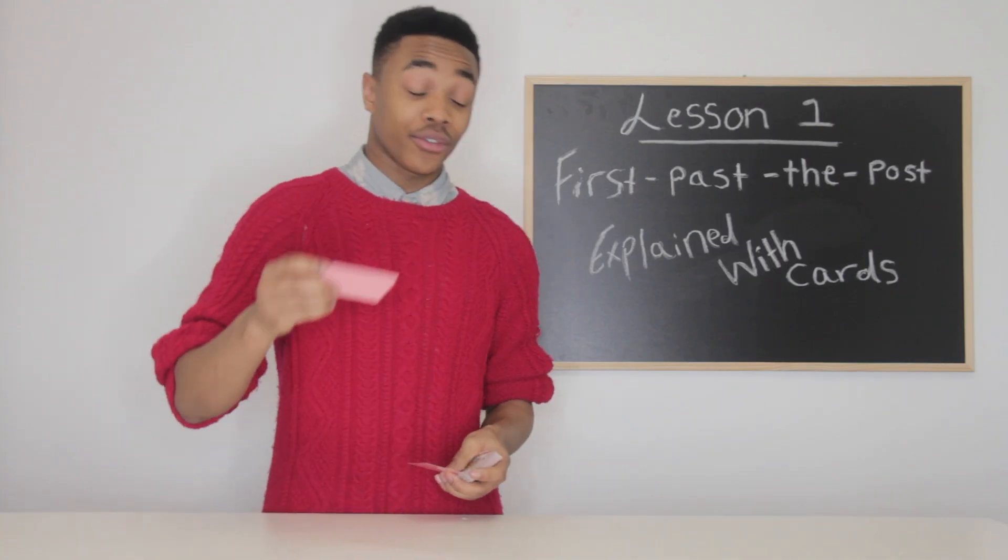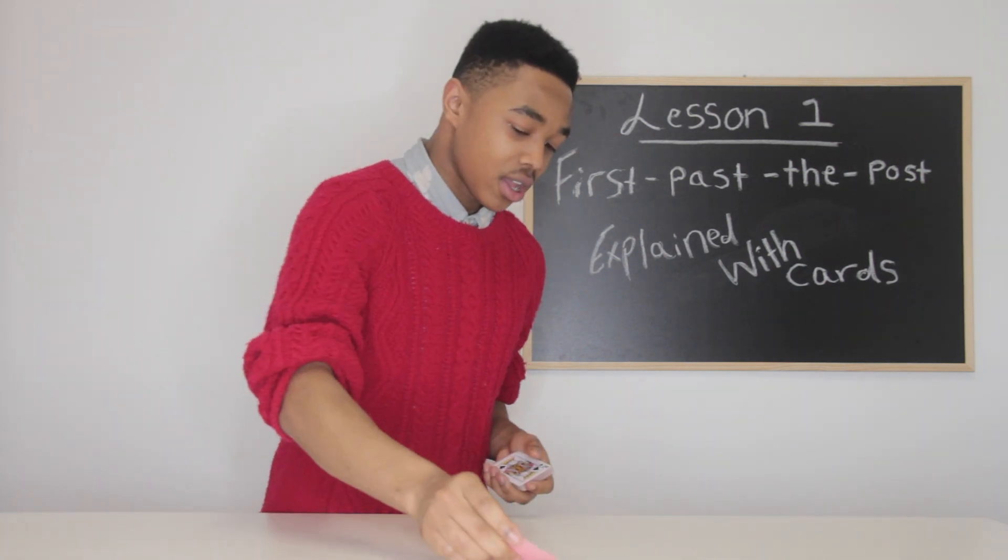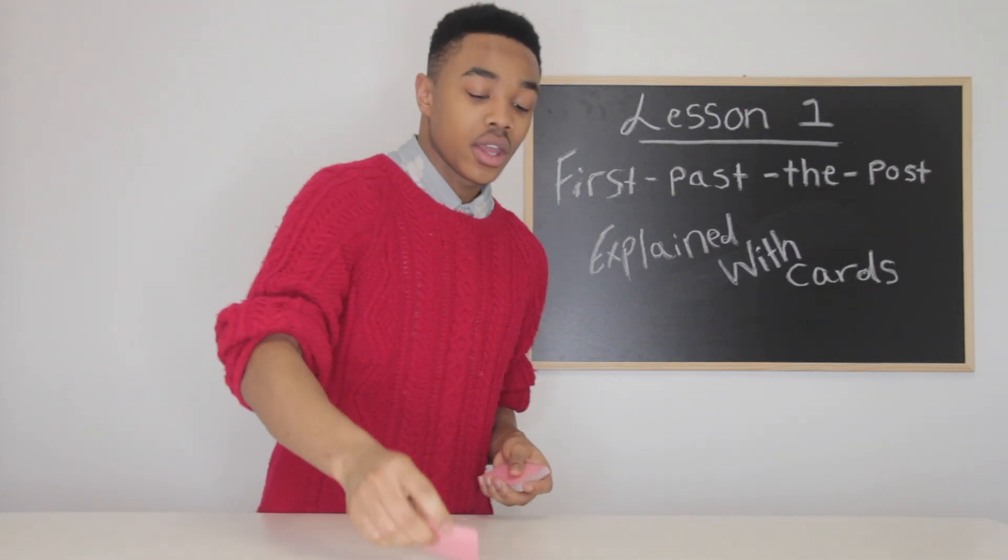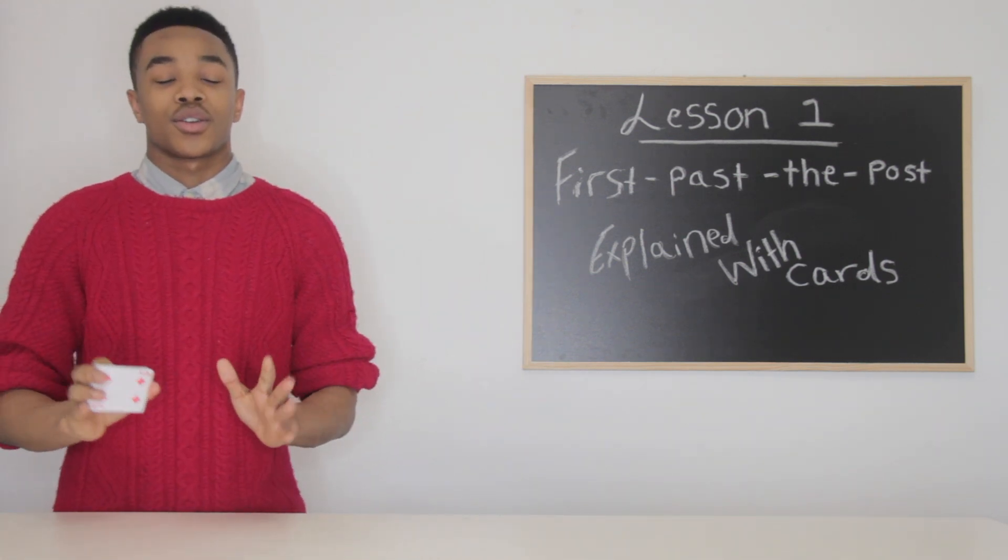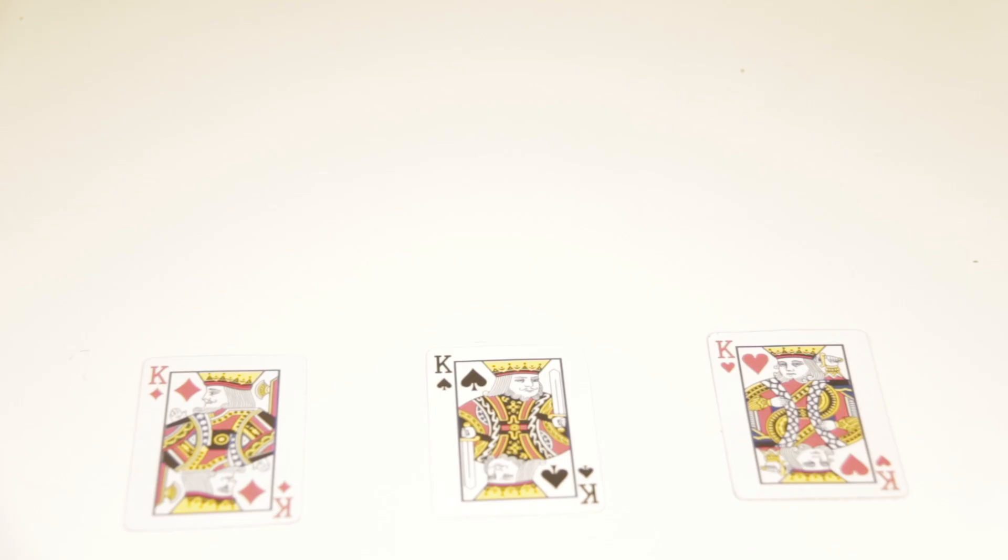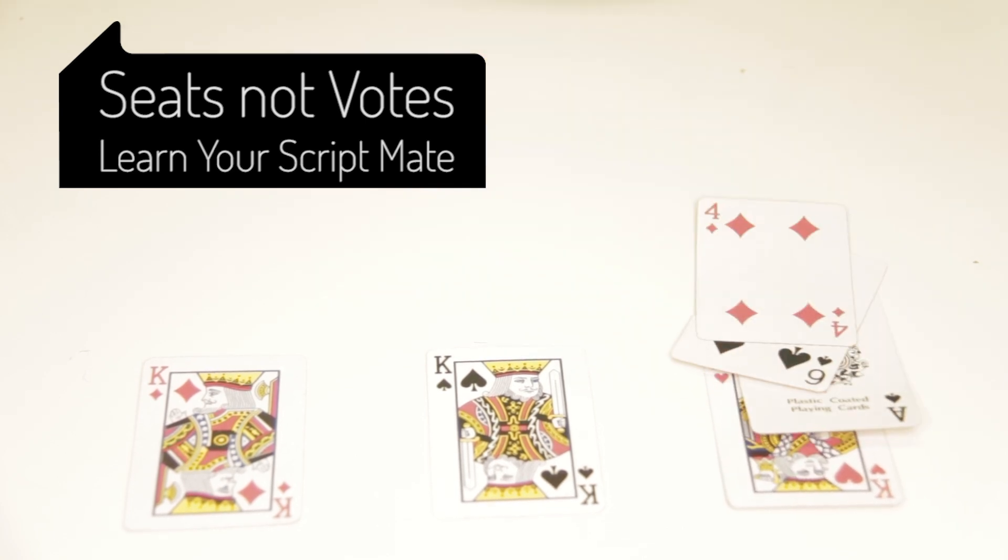First of all, we have the Liberal Democrats. Second of all, the Conservative Party, and also the Labour Party. So for the Liberal Democrats, they have four votes. One, two, three, four.